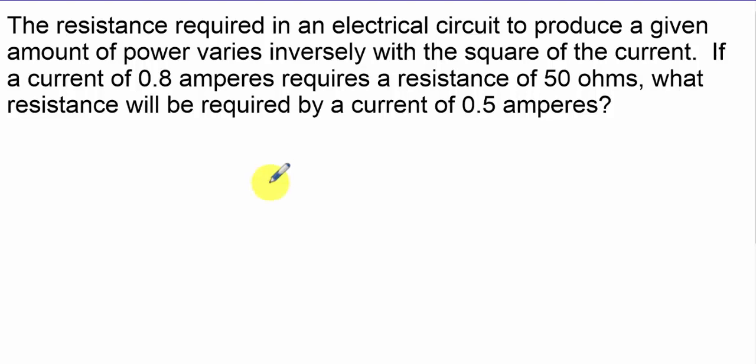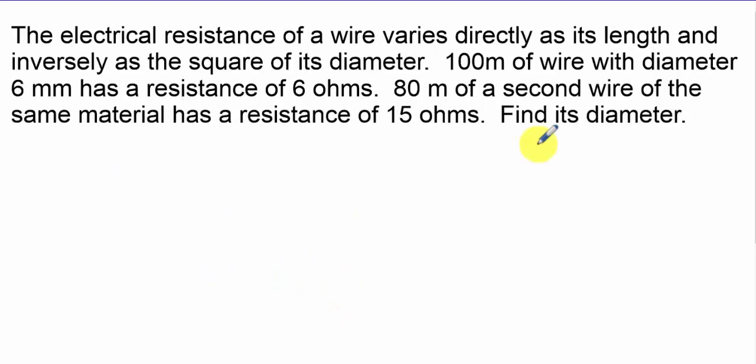Now things get a little wordy, just make sure you read carefully. Resistance varies inversely with the square of the current. We read through and it appears to be a two-situation problem. It says if a current of 0.8 amps requires resistance of 50 ohms, and then they give us another current of 0.5, what resistance are we going to have? Again, simply take and divide 0.5 squared to both sides, and we get the resistance which will be in ohms.